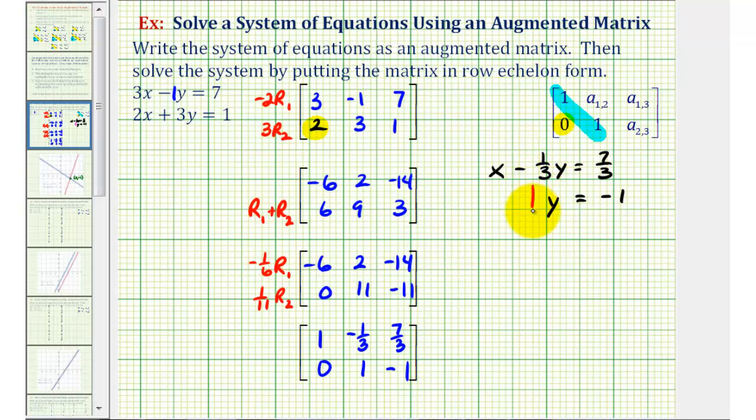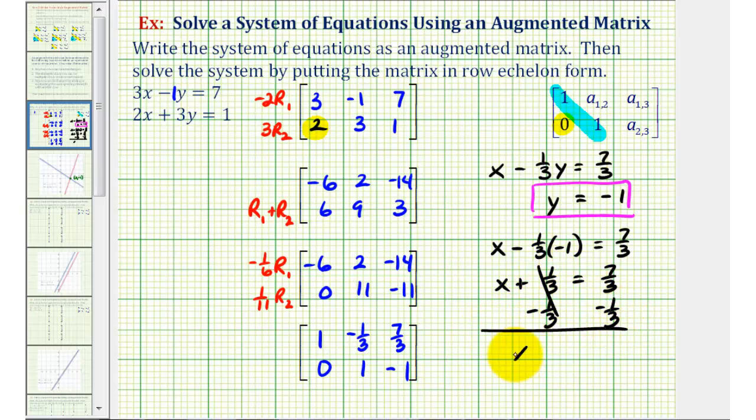So now we know the y value of our solution, so we can perform back substitution to find the value of x. So using the first equation, we would have x minus one-third times y, which is negative one, equals seven-thirds. So we have x plus one-third equals seven-thirds. Subtract one-third on both sides. So we have x equals, this would be six-thirds, or positive two. So this is the solution to our system using row echelon form of an augmented matrix.